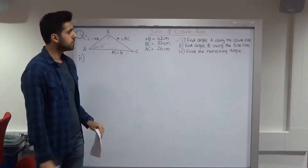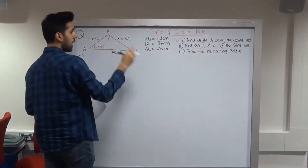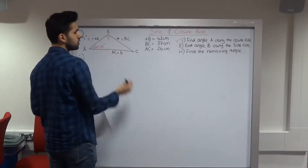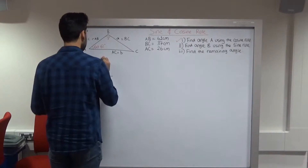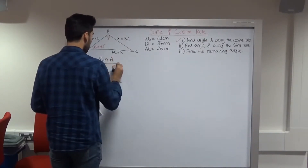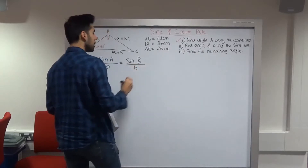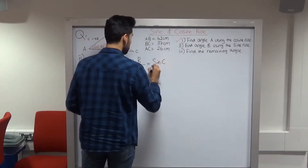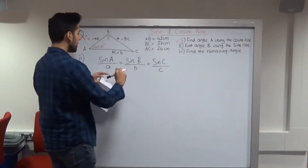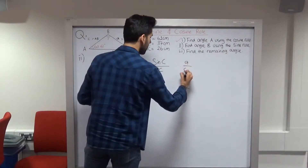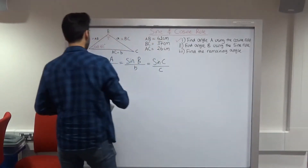Now we move on to part 2, which says find angle B using the sine rule. From part 1 we found angle A = 60.63° (kept to two decimal places for accuracy). The sine rule, when finding an angle, is: sin(A)/a = sin(B)/b = sin(C)/c. If you were finding a length instead, you'd flip it to a/sin(A) = etc. In this case we want an angle, so we use the standard form.